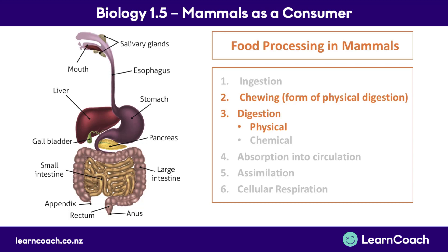When looking at where these occur in the digestive system, we'll be looking at the mouth, the stomach, and the small intestine. The whole purpose of physical digestion is to break up food molecules into a small enough form to be absorbed in the small intestine, so a lot of physical digestion occurs before the food reaches it.